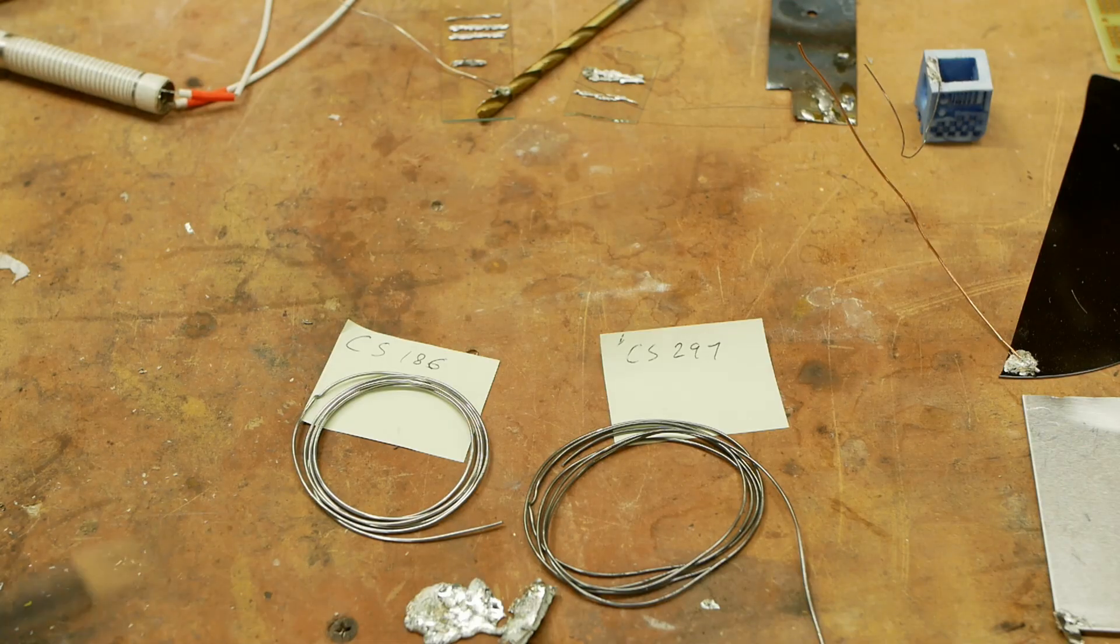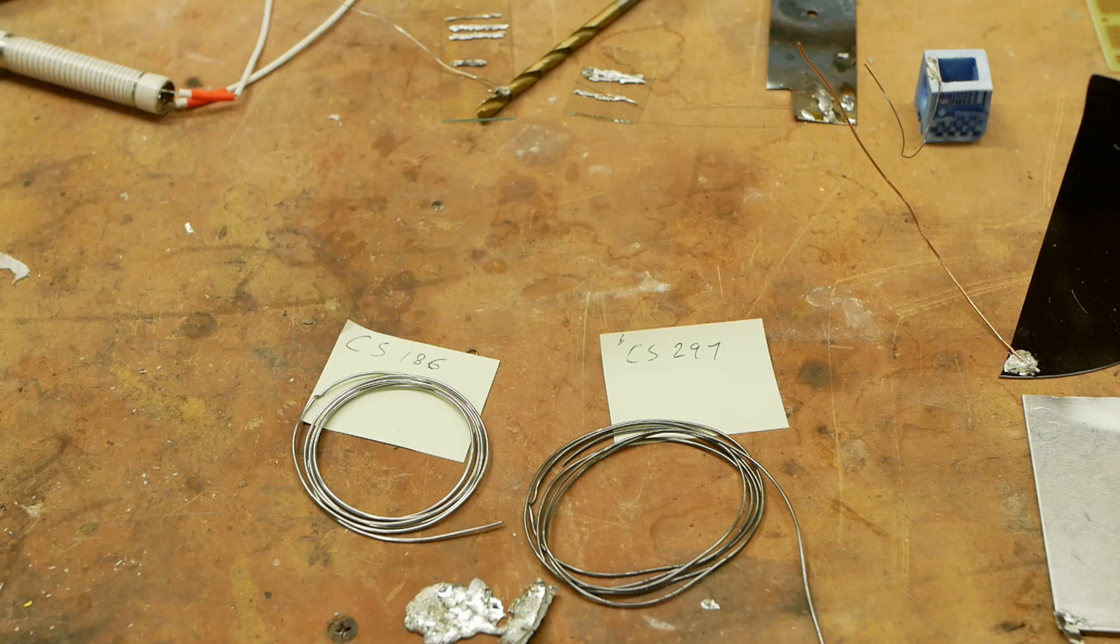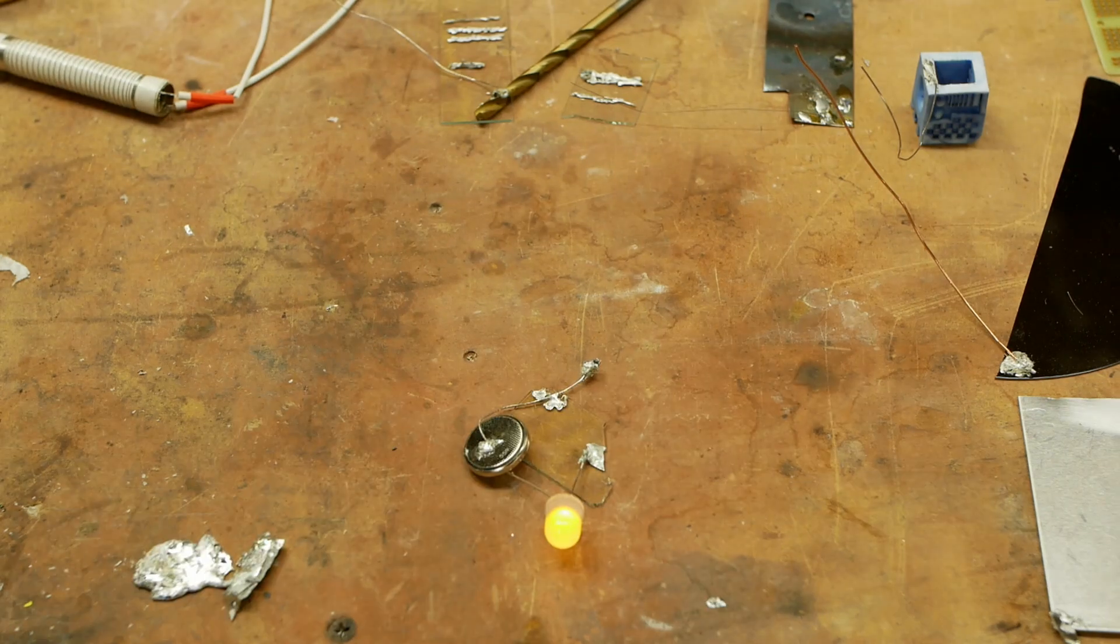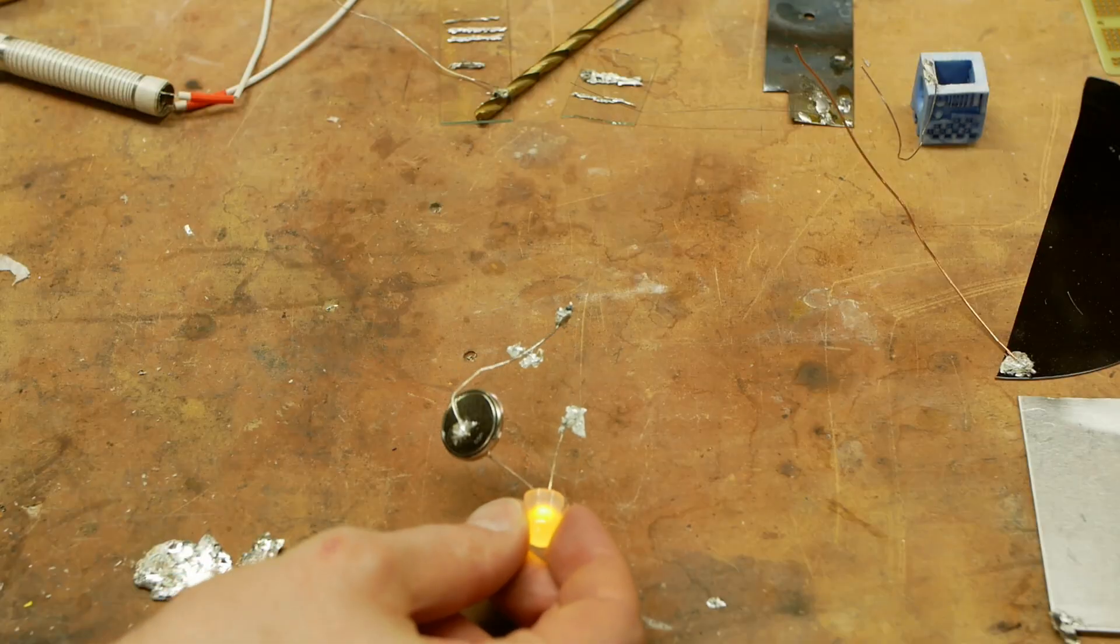So anyway, I thought we'd close by taking a look at some especially relevant examples of how you might use this in current technology. One especially relevant use of this is to bond to ITO-coated glass.